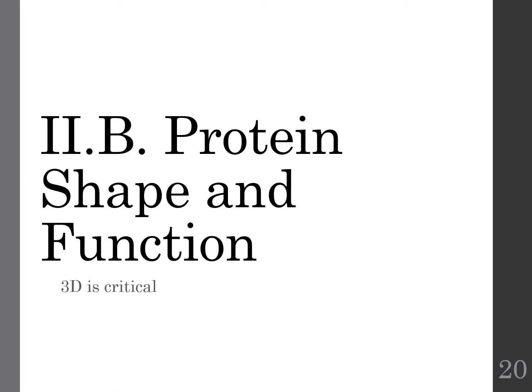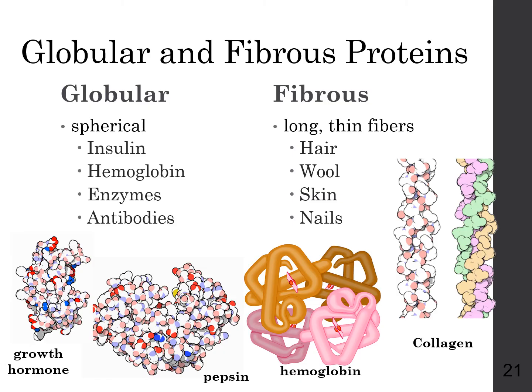Proteins and their shapes determine their function. They fall into two typical categories: globular proteins, which look spherical and typically perform some sort of biological activity, and fibrous proteins, which are thin and long and tend to be more structural — building or holding things together.